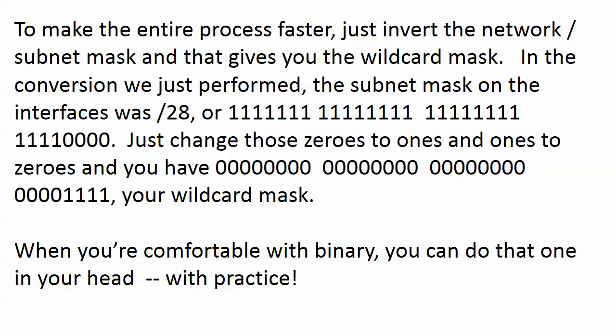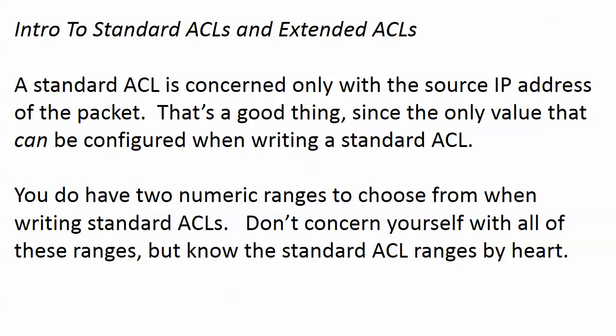For example, if they gave us a slash 30 subnet mask and we needed a wildcard mask, a slash 30 is 30 ones followed by two zeros. Invert that and you get 30 zeros and two ones at the end, which converts to 0.0.0.3. This is a skill that gets a little tricky at first, but with plenty of practice you'll be doing it in seconds on exam day, which will really help you pass.